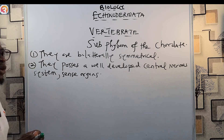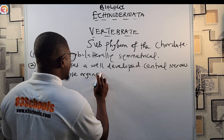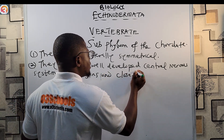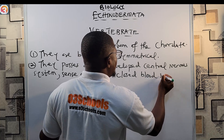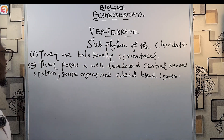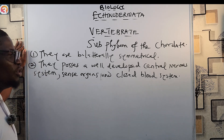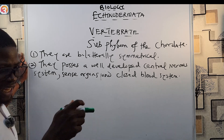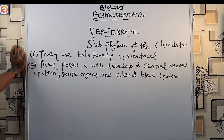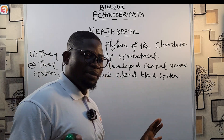They also have a well-developed closed blood system. So the vertebrates possess a well-developed central nervous system, sense organs, and a closed blood system. Take note: the vertebrates are divided into five classes, which we'll look at one after the other in the next episodes.